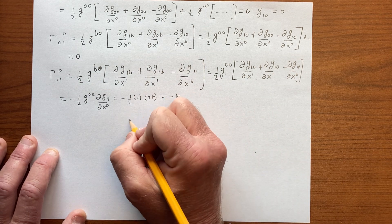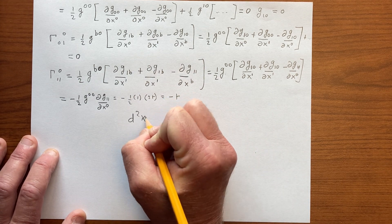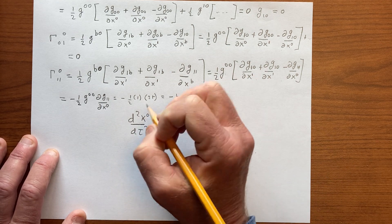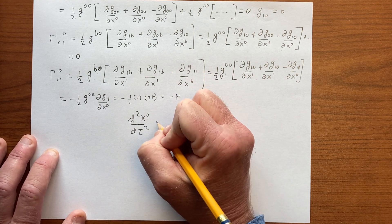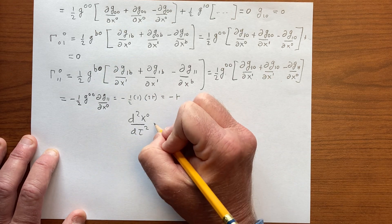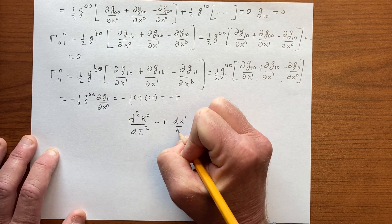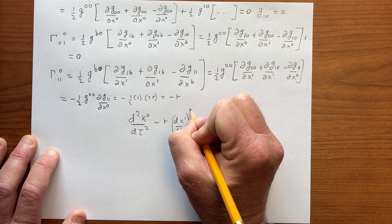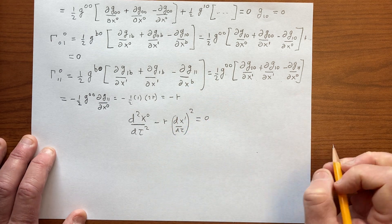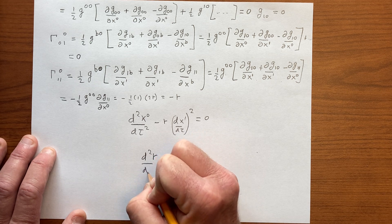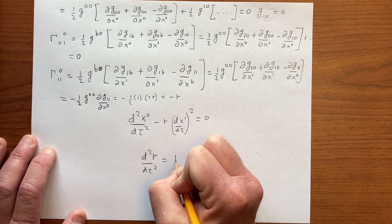And so the d²x^0 in this time parameter, so the geodesic equation becomes minus r times dx^1 in this time parameter squared equals 0.